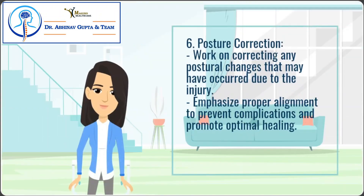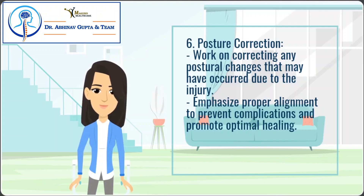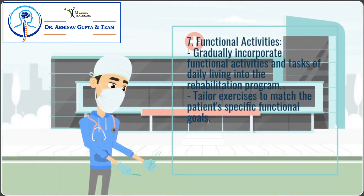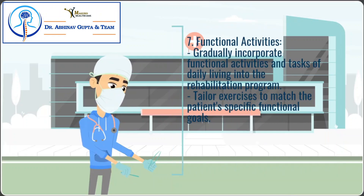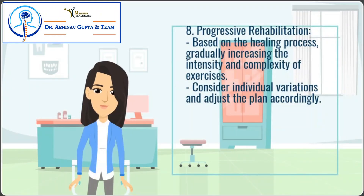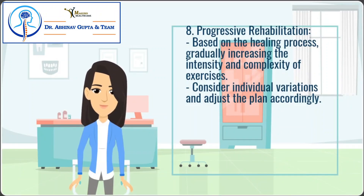Posture correction: work on correcting any postural changes that may have occurred due to the injury, emphasizing proper alignment to prevent complications and promote optimal healing. Functional activities: gradually incorporate functional activities and tasks of daily living into the rehabilitation program, tailoring exercises to match the patient's specific functional goals. Progressive rehabilitation: based on the healing process, gradually increase the intensity and complexity of exercises, considering individual variations and adjusting the plan accordingly.